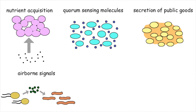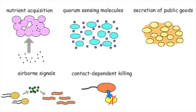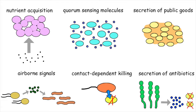Microbes can also coordinate their behaviour and communicate with more distantly located organisms through the release of airborne volatile compounds. On the competition end, bacteria can directly kill each other or they can use antibiotics to inhibit the growth of others.